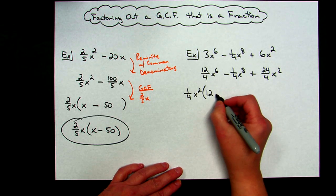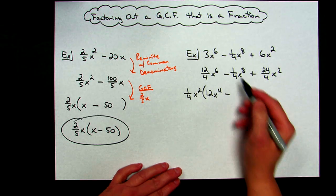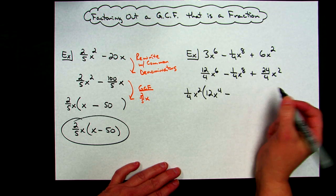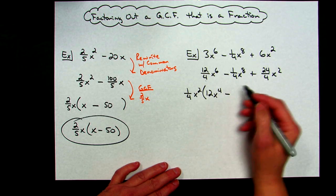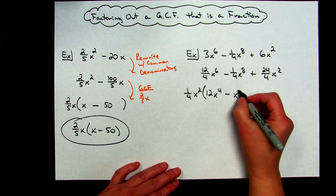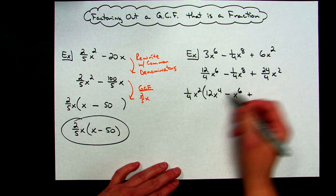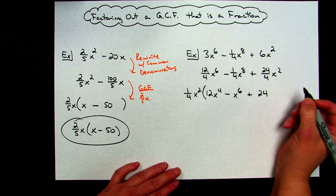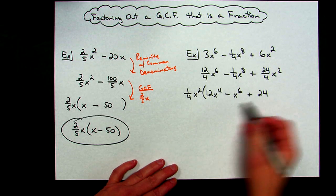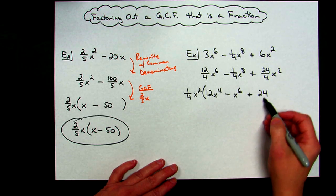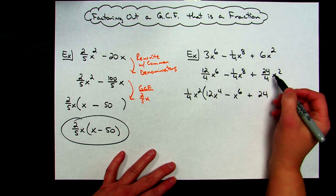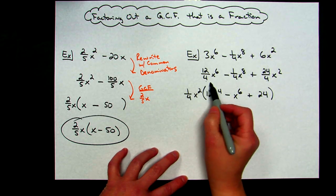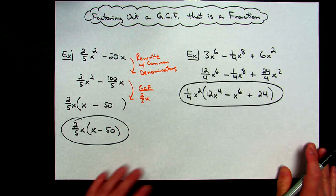Factoring it out: 12/4 divided by 1/4 leaves 12, and x⁶ with x² taken out leaves x⁴. For the second term, 1/4 divided by 1/4 gives a coefficient of 1, which I won't write; x⁸ with x² taken out leaves x⁶. For the third term, 24/4 divided by 1/4 leaves 24, and x² divided by x² leaves no x terms. So the final answer is 1/4 x² times (12x⁴ minus x⁶ plus 24).